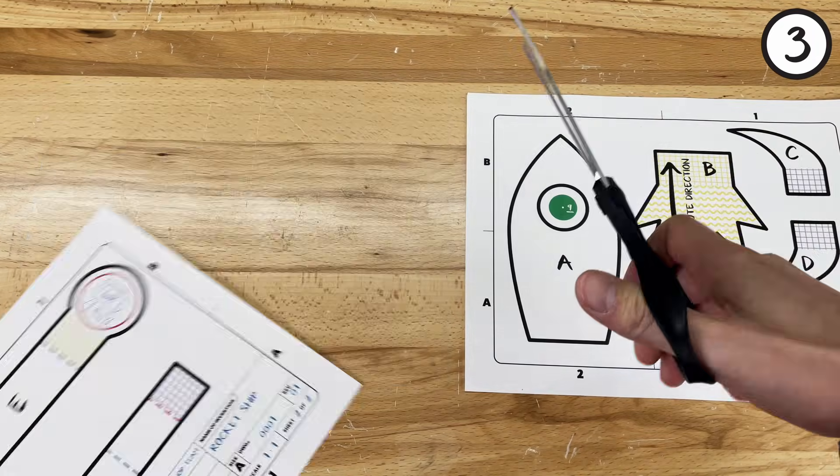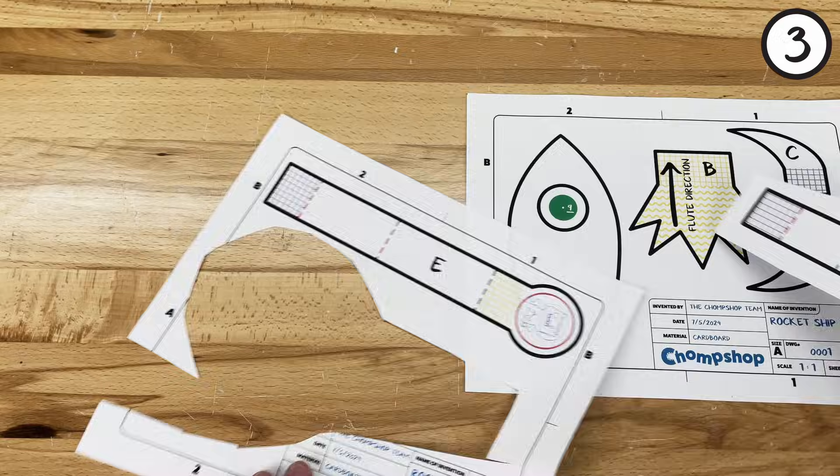Step 3. Cut out the shapes using a pair of scissors, being sure to leave some room around the edges.